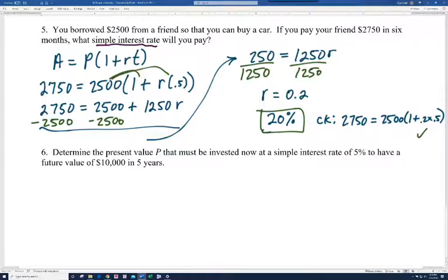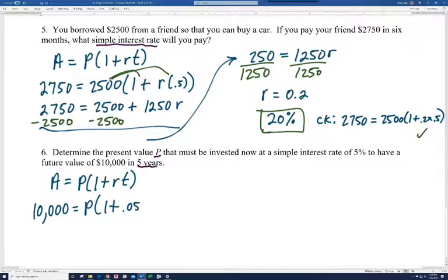Determine the present value P that must be invested now at a simple interest rate of 5% to have a future value of $10,000 in five years. So again, I'm going to write the formula. Notice we're looking for P here. So we should have all the other information. So the future value, that's my A, is equal to P, which we don't know, times 1 plus R. Our interest rate is 0.05 times T. Notice it's five years here.